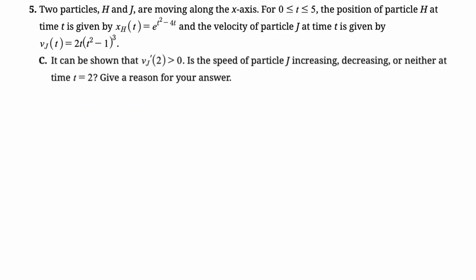Let's look at part C. It can be shown that v'_J(2) is greater than 0. So they're just telling you acceleration, basically, is greater than 0. Is the speed of the particle J increasing, decreasing, or neither at time 2? So we're going to need to know the velocities. Is the velocity positive or negative? We just made a sign chart for this, so we could refer to that, but I'm just going to do it. So v_J(2) is going to be 4, and then you get 4-1, and you cube it. That's definitely positive. We don't need to work out the value. We just know that's positive.